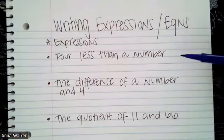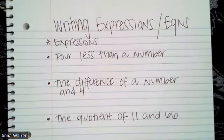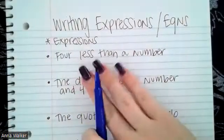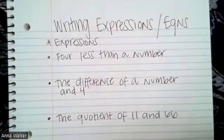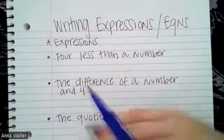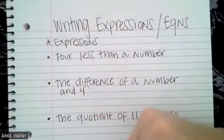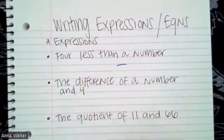So we have the first problem, four less than a number. So when I look at the English statements, I'm kind of trying to decipher which word is going to clue me what operation we're going to need to use. Do we need to use addition, subtraction, multiplication, division? Do we need to use more than one operation? So less than is going to mean subtraction. So I know that this is going to be subtraction.